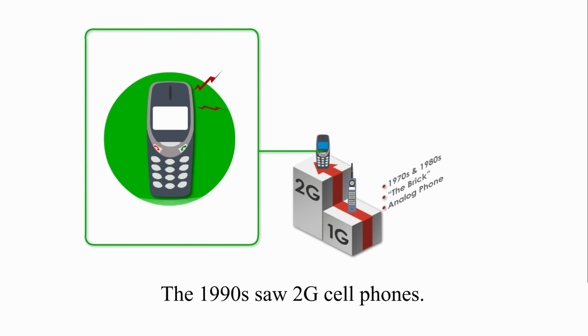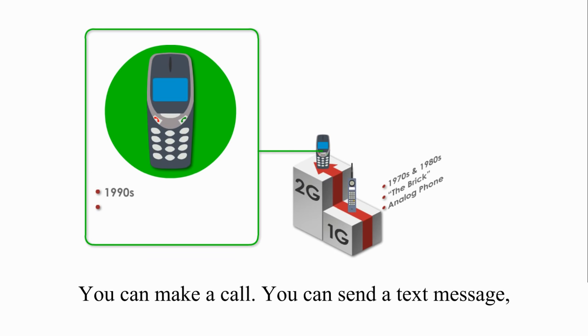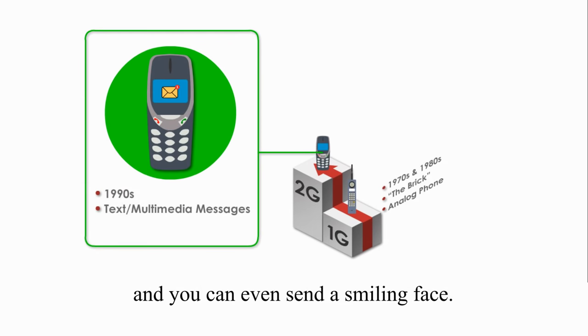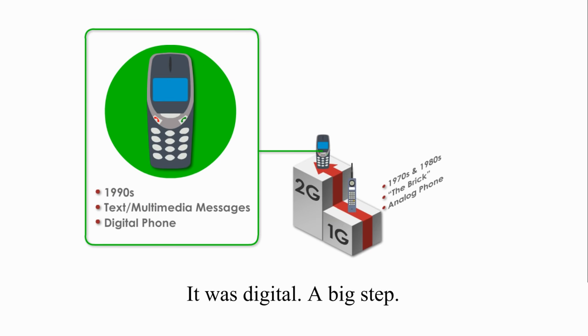The 1990s saw 2G cell phones. You could make a call, send a text message, and even send a smiling face. It was digital, a big step.